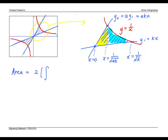To find the area of the yellow region, we take the left endpoint 0 to the right endpoint 1 over square root AK. The top function is Y2 minus the bottom function, which is Y1.